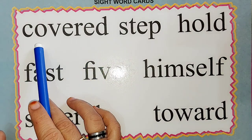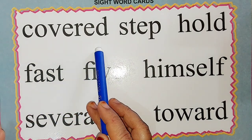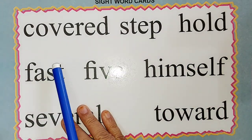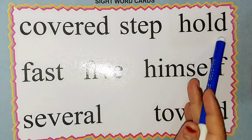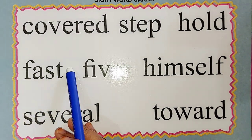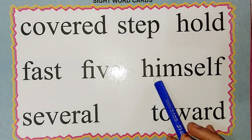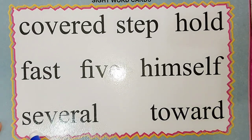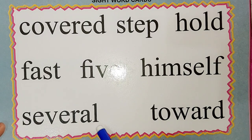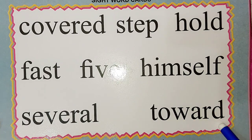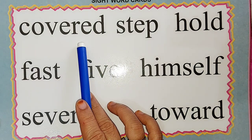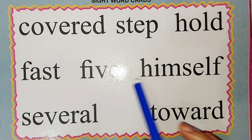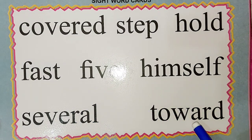The next word is C-O-V-E-R-E-D: cover. S-T-E-P: step. H-O-L-D: hold. F-A-S-T: fast. F-I-V-E: five. H-I-M-S-E-L-F: himself. S-E-V-E-R-A-L: several. W-A-R-D: tour. Once again: cover, step, hold, fast, five, himself, several, tour.